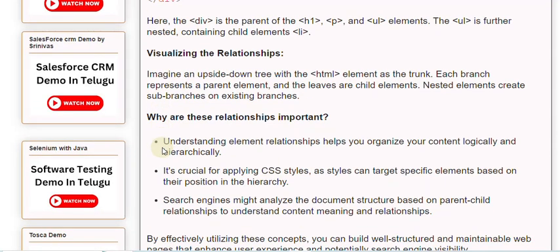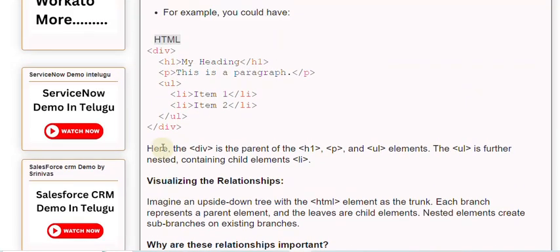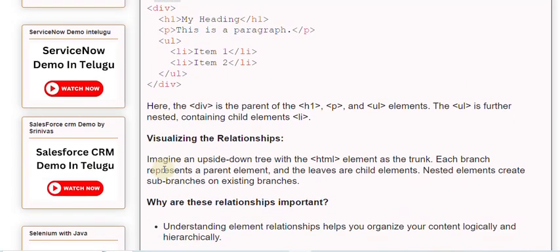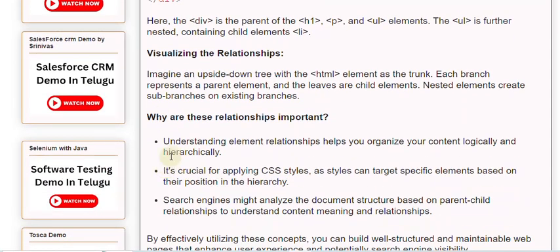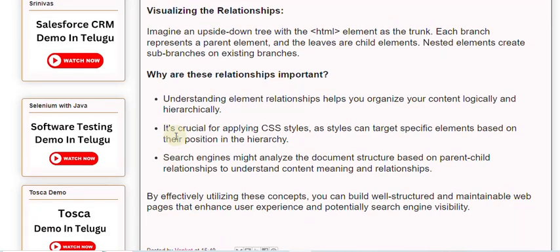Why are these relationships important? Understanding element relationships helps you organize your content logically and hierarchically. It's crucial for applying CSS styles, as styles can target specific elements based on their position in the hierarchy. Search engines might analyze the document structure based on parent-child relationships to understand content meaning and relationships. By effectively utilizing these concepts, you can build well-structured and maintainable web pages that enhance user experience and potentially search engine visibility.